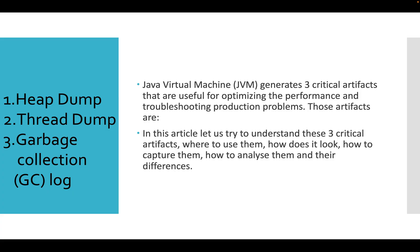So where do heap dump, thread dump, and garbage collection come into the picture? Whenever we have our JVM running a Java application, we need to troubleshoot and look into resource utilization to ensure it is at the optimum level. JVM generates three different kinds of critical artifacts that are useful for optimizing performance and troubleshooting production problems. Without these, it would be almost impossible to find issues in the JVM. So in this video we will go through heap dump, thread dump, and garbage collection — each one by one.